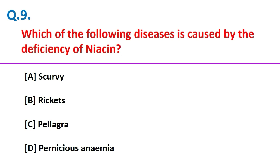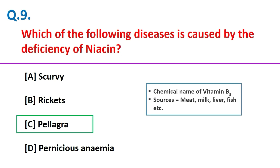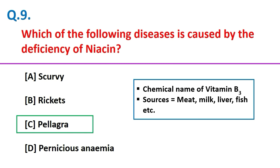Which of the following diseases is caused by the deficiency of niacin? Pellagra. Friends, niacin is the chemical name of vitamin B3, and good sources are meat, milk, liver, fish, etc.